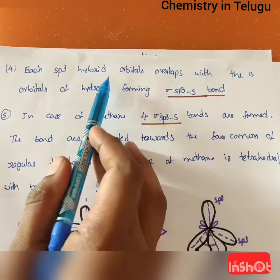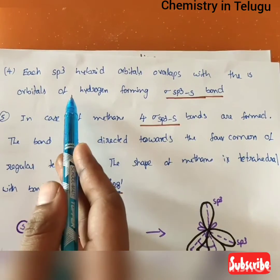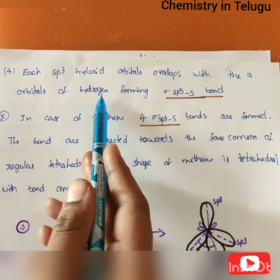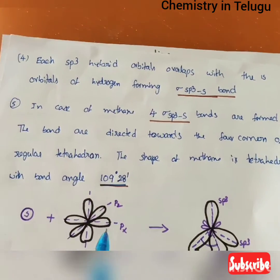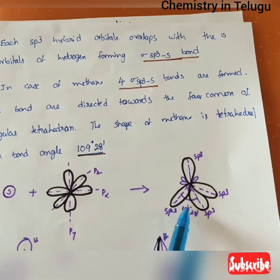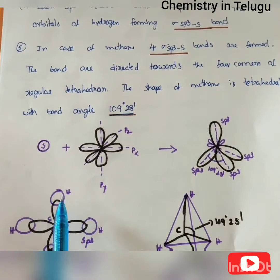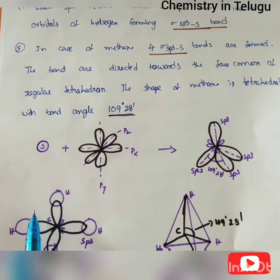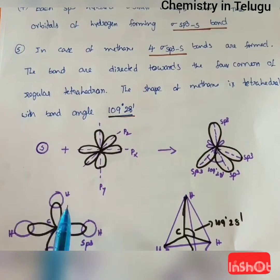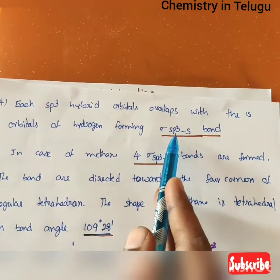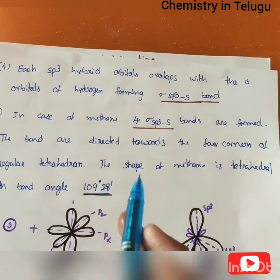Each SP3 hybridized orbital overlaps with the S orbital of a hydrogen atom, forming a sigma bond (SP3–S sigma bond). Since every single bond is a sigma bond, each of the 4 SP3 orbitals overlaps with a hydrogen S orbital to form a sigma bond.